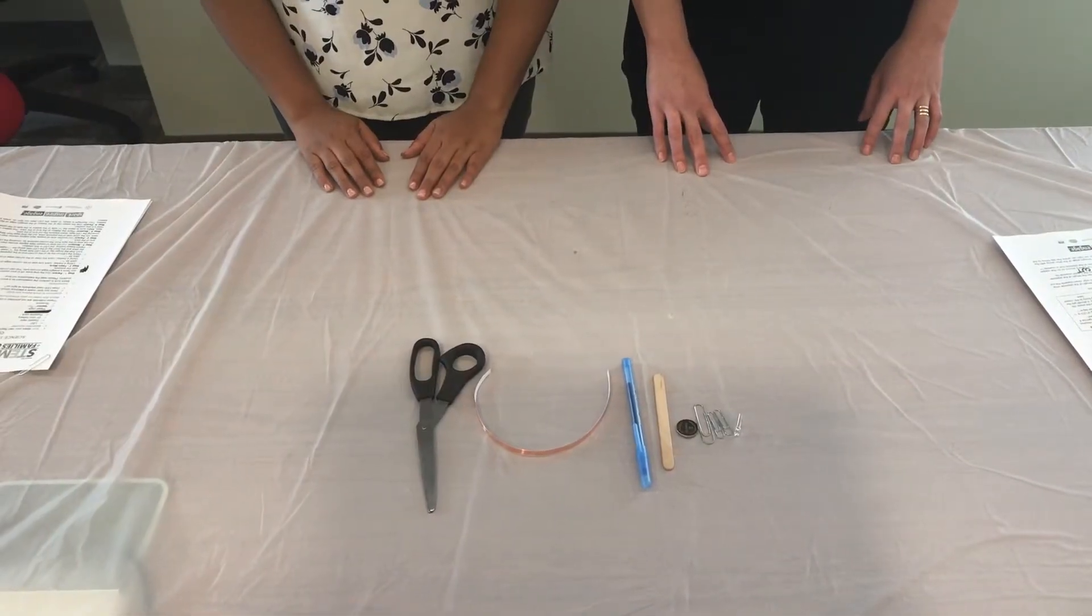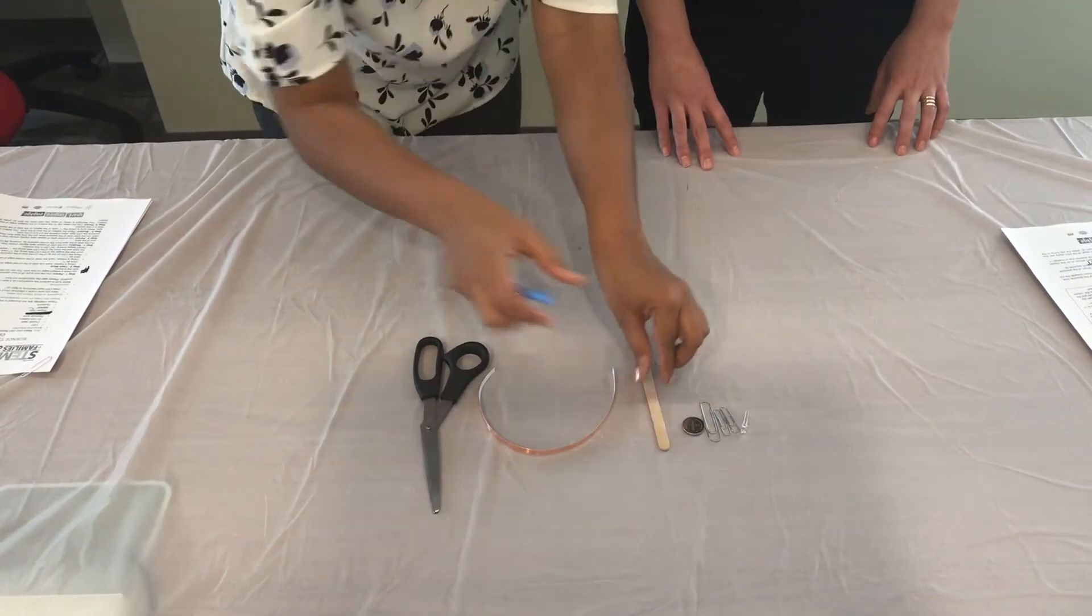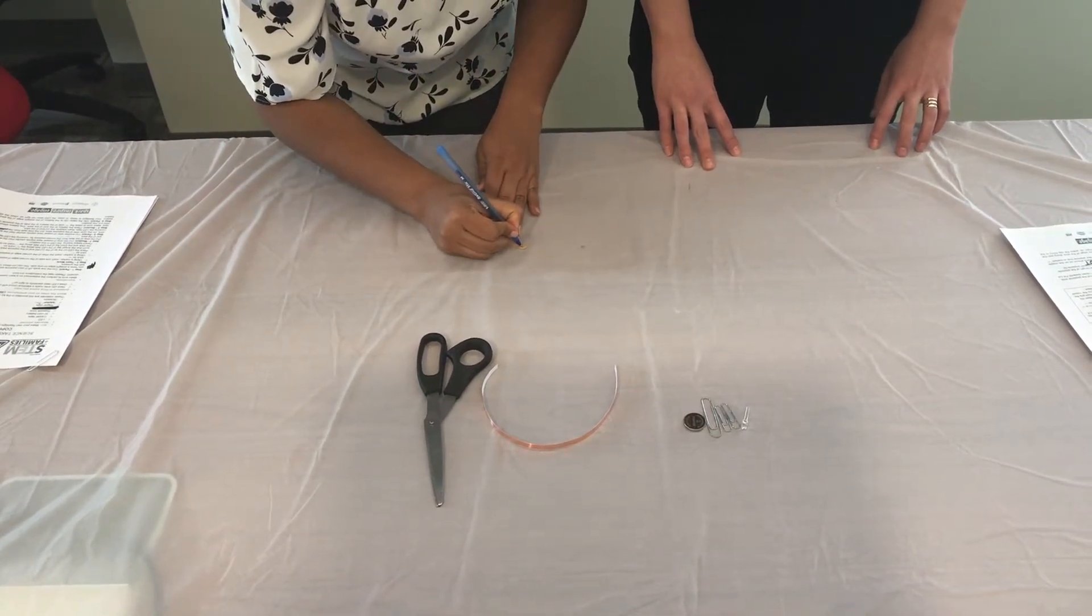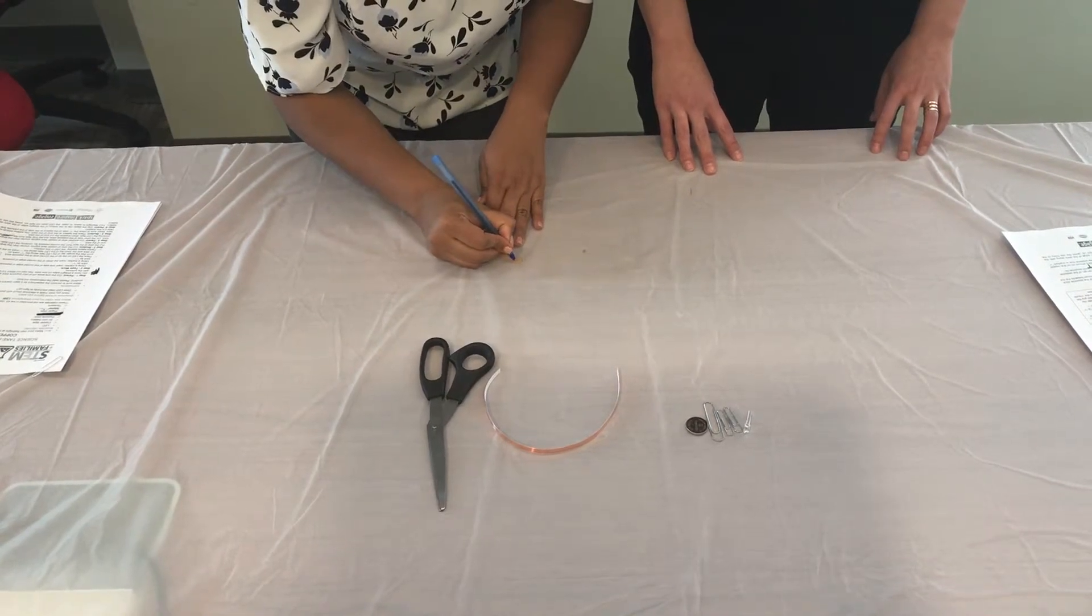So first, using a pen, mark one side of the curved edge of the popsicle stick with a plus sign. After you do that, you're going to flip it over and mark the opposite side of the popsicle stick with a minus sign.